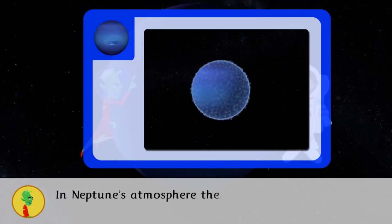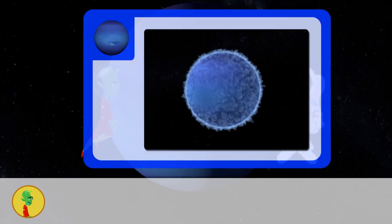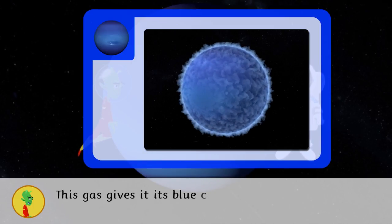In Neptune's atmosphere, there is hydrogen, helium and methane that can be used as fuel. This gas gives it its blue colour.